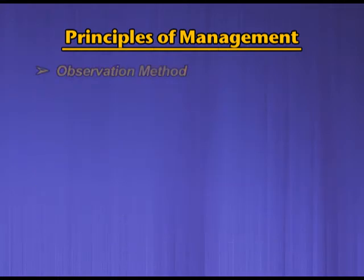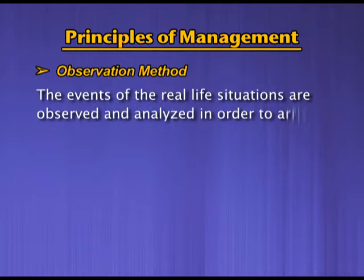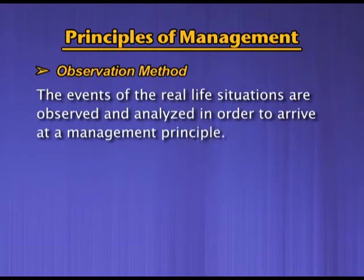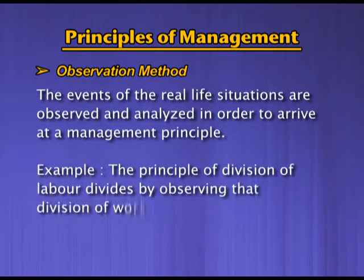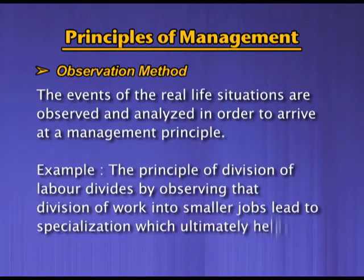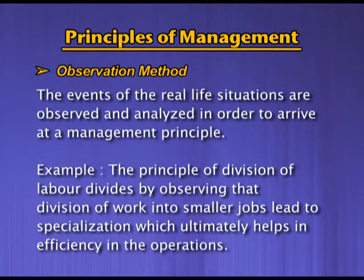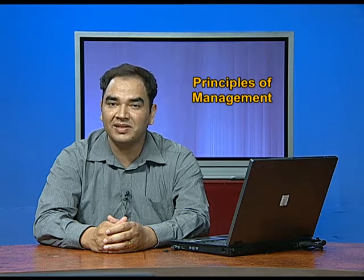The second method is the observation method. In the observation method, the events of real-life situations are observed and analyzed in order to arrive at a management principle. For example, the principle of division of labor was derived by observing that division of work into smaller jobs leads to specialization, which ultimately helps in efficiency in operations. These are the two ways through which management principles are derived.